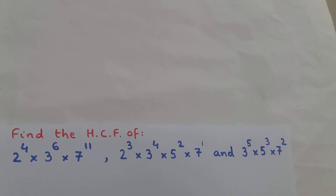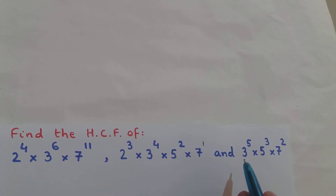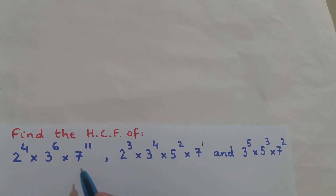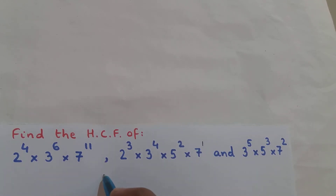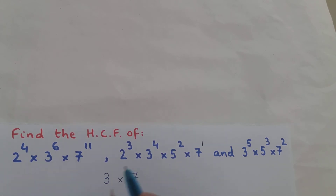Now you write down the bases that are present in all three expressions. Base 3 is present in all three expressions, and base 7 is also present in all three expressions. So I will write it as 3 × 7, since those are the common bases.